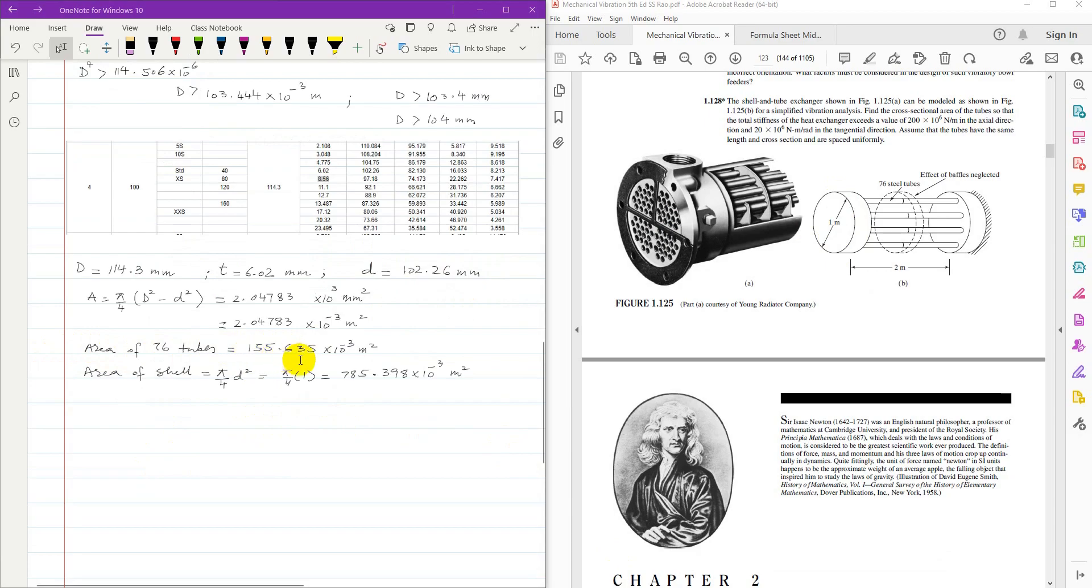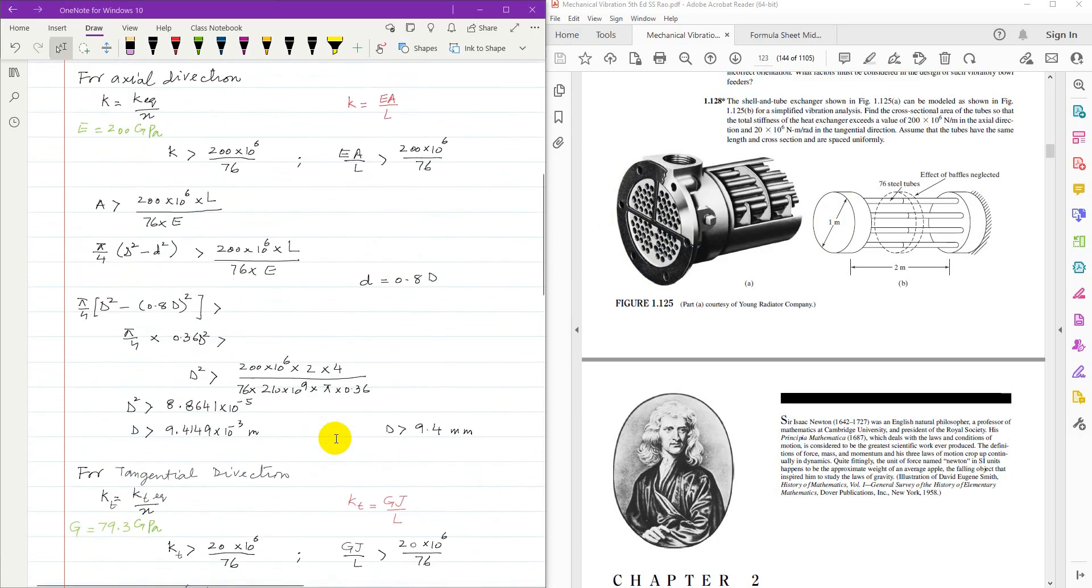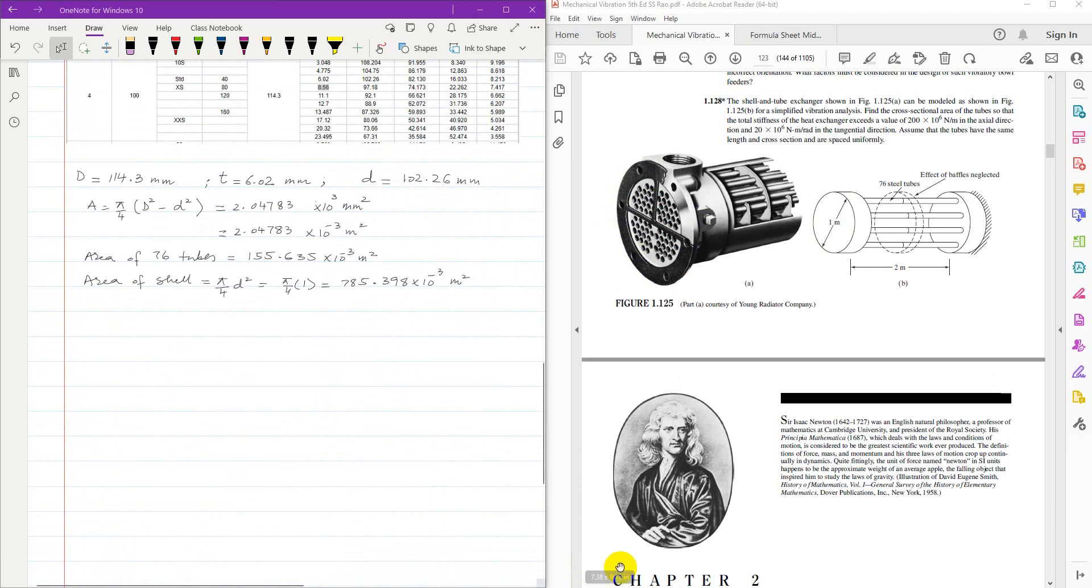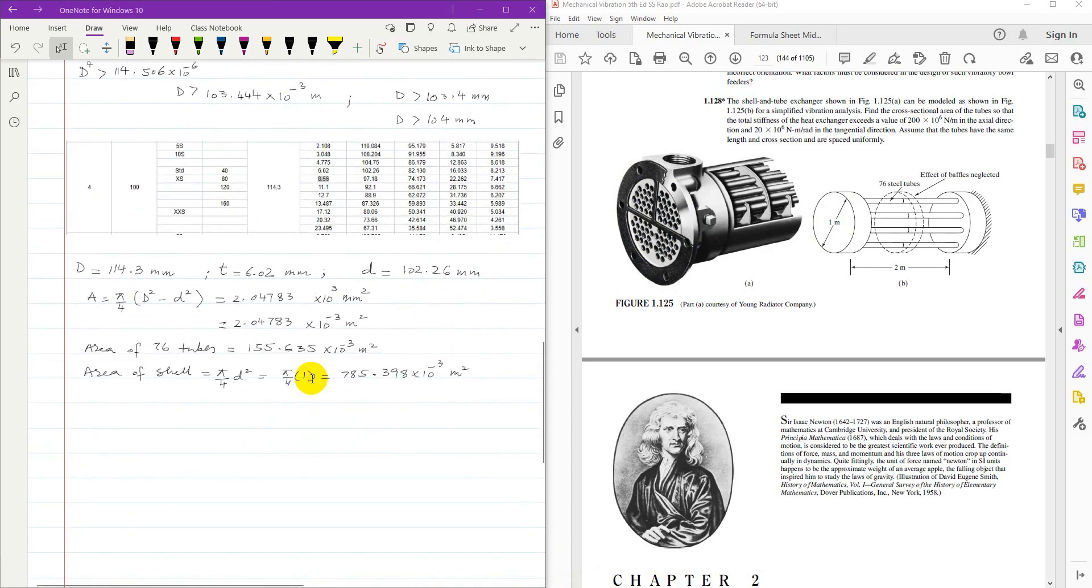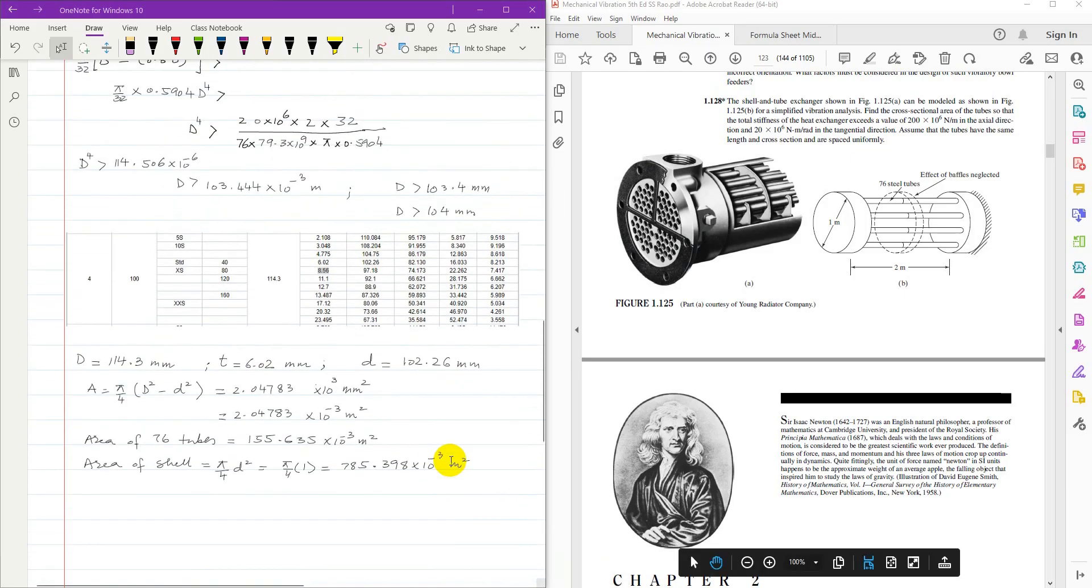and for 76 tubes it will be multiplied by 76. So area of 76 tubes comes as 155.635 into 10 to the power minus 3 and area of the shell cross-sectional area comes at 785.398 which is more than the area of tubes. Now even for that diameter and having an arrangement in which the heat transfer is effective, that tube can be used. That is the overall solution of this problem. The solution in the solution manual is not correct. Thank you very much for watching.